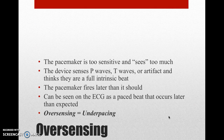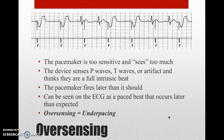In oversensing, the pacemaker is too sensitive and sees too much. The device senses P waves, T waves, or artifact and thinks they are a full intrinsic beat. The pacemaker fires later than it should. This can be seen on the ECG as a paced beat that occurs later than expected. Oversensing causes underpacing.